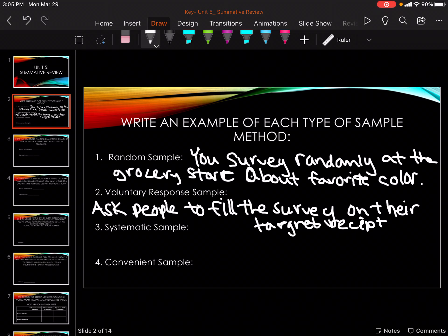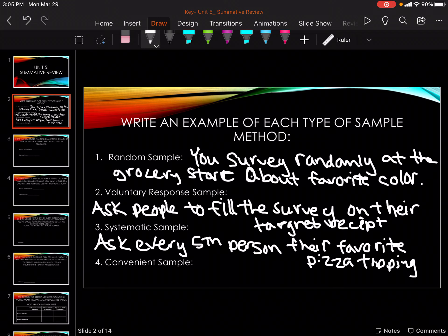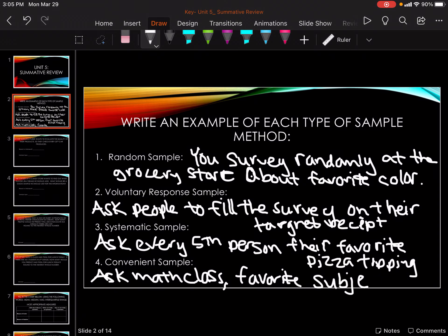Okay, systematic random is ask every fifth person their favorite pizza topping. Convenient is asking my math class their favorite subject. Again, yours may be different and that's fine.